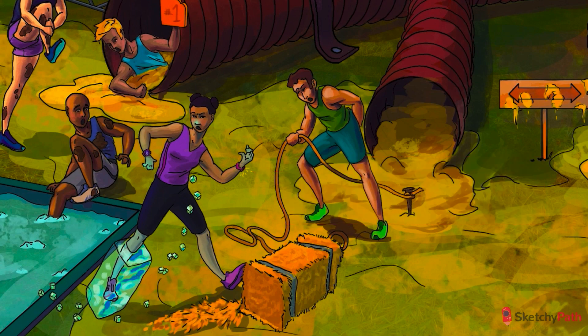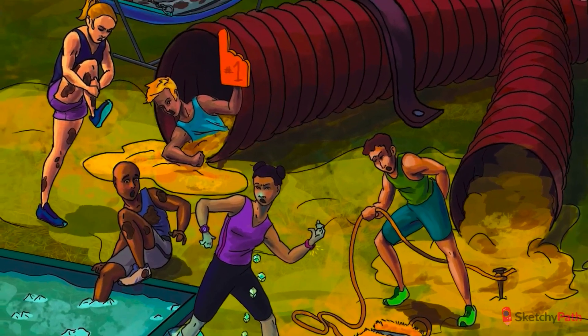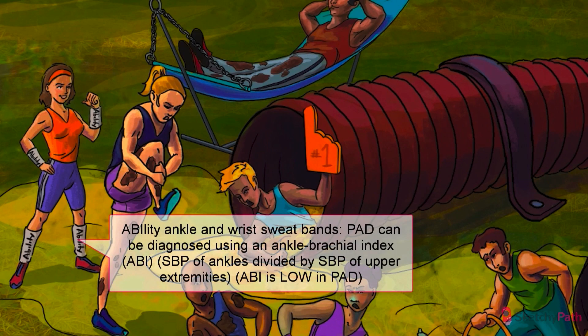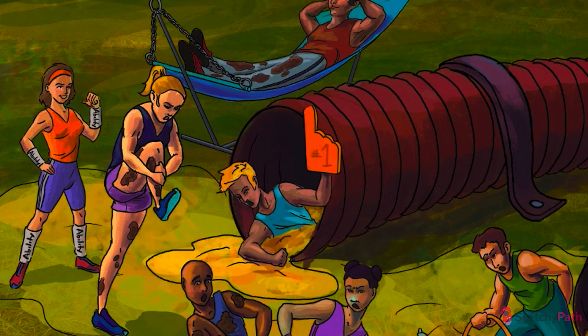Acute limb ischemia is usually treated with a combination of anticoagulation and endovascular intervention to remove the clog in the pipe. PAD is often diagnosed by comparing the blood pressure in the upper extremities to the same measurements in the lower extremities — blood pressure is taken at both ankles and in both arms, represented by four sweatbands. The systolic blood pressure in both ankles is divided by the systolic pressure in the arm, giving you the ankle brachial index. A normal index is around 1.2; any measurement less than 0.9 is consistent with PAD, and values below 0.5 indicate severe PAD with impending limb ischemia possible.